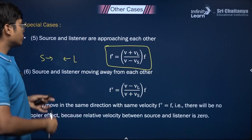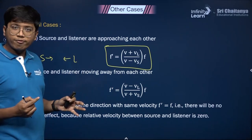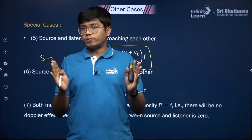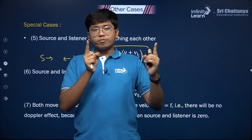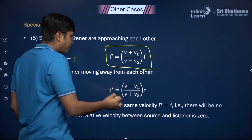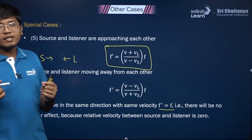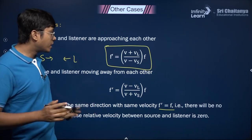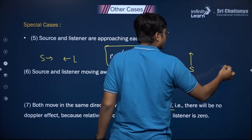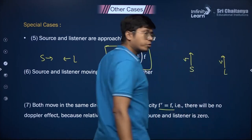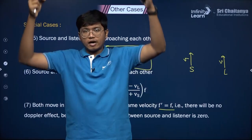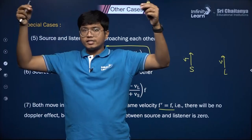If both source and listener move in the same direction with the same velocity, then F' = F. This is important to remember because any change in frequency in the Doppler effect only happens when there is relative motion. If both move with the same velocity, the distance between them remains constant, so apparent frequency equals original frequency. Another case: both moving with the same velocity but perpendicular to each other. The source and listener both move perpendicularly — their relative distance stays constant throughout, so again there is no relative motion and no Doppler effect.